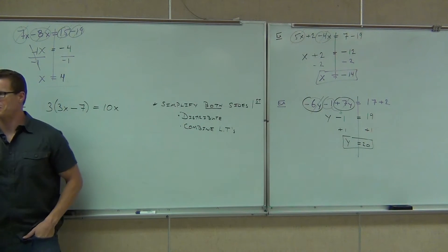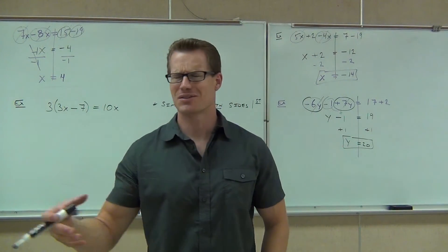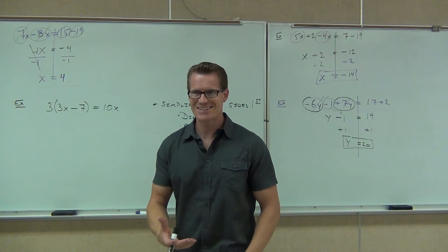What are we going to do? Well, the first thing you've got to do is simplify both sides. Listen, in order to solve equations, you've got to have something that looks like this. You've got to have that. So in order to solve our equations, the very first thing we're going to do, we're going to simplify both sides first.